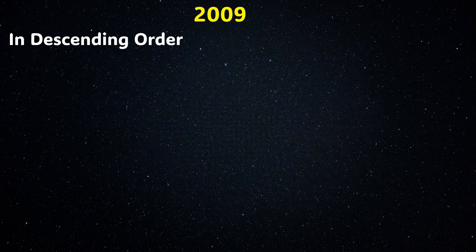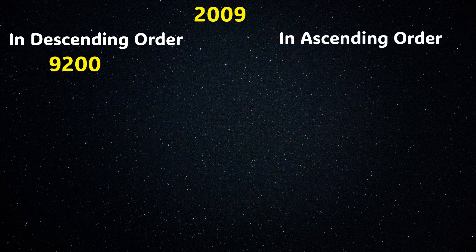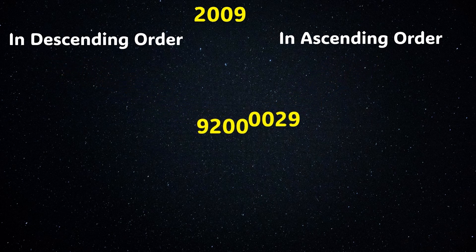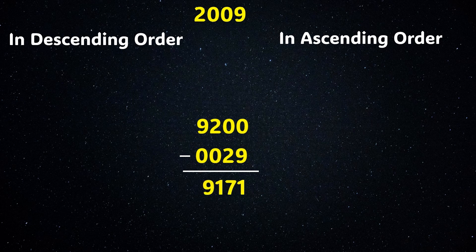We write the digits of 2009 in descending order and get 9200. We write the digits in ascending order and get 0029. Note that leading zeros are allowed in this process. Now we subtract the smallest number from the largest number and get the resulting four-digit number: 9171.